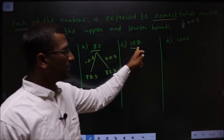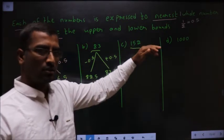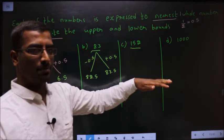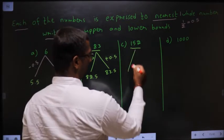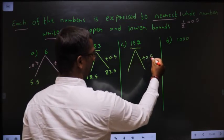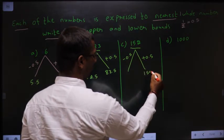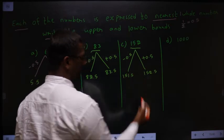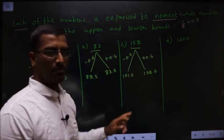152 — even this is also to the nearest whole number. So it is nearest to whatever; you should do half. So half we get 0.5, and that you should add and subtract. So when I add I get 152.5, and when I subtract I get 151.5. So this is the lower bound and this is the upper bound.